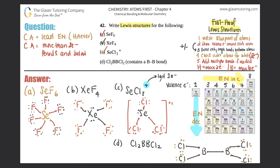Check the outer elements for the octet. Each chlorine has two, four, six, eight - all good. Now check the center: each boron has two, four, six electrons. That's okay because remember, when neutral, boron only wants a max of six electrons. Even though boron doesn't have the octet, it's still correct because it only wants a maximum of six. That is the final answer, and those are the answers to problem 42.